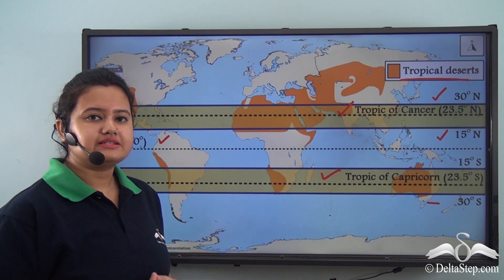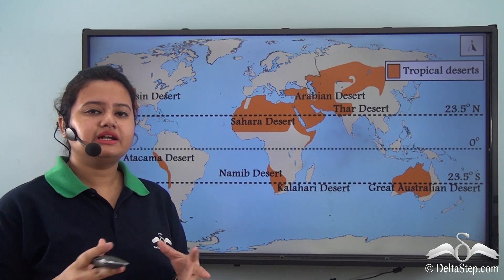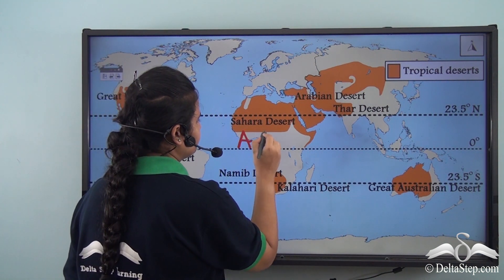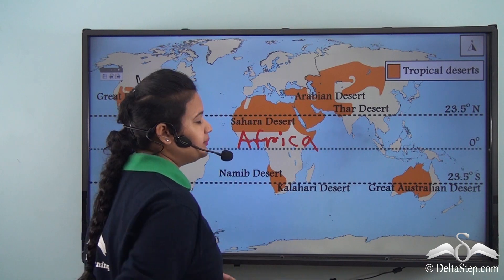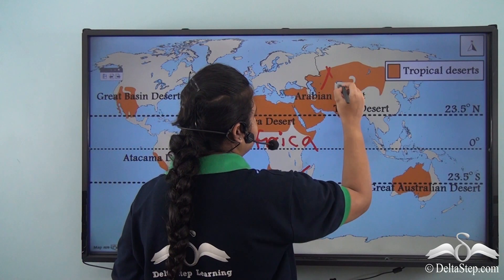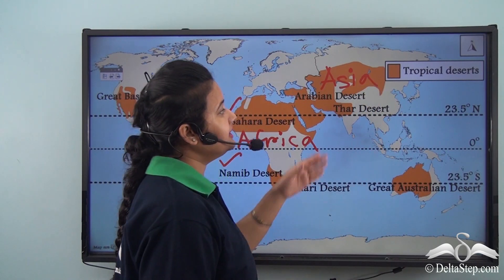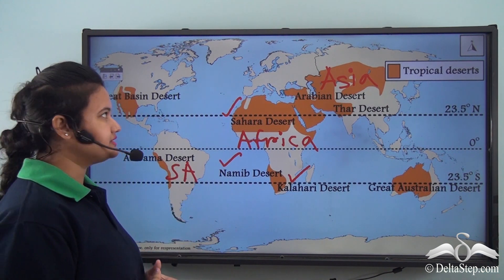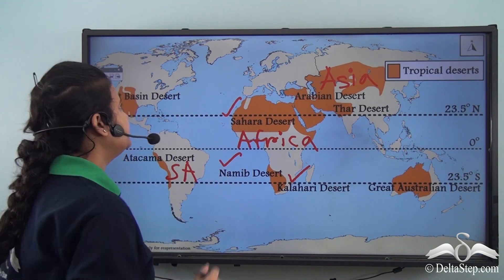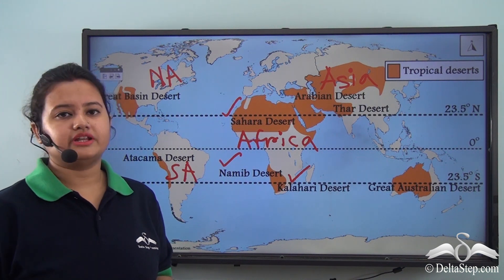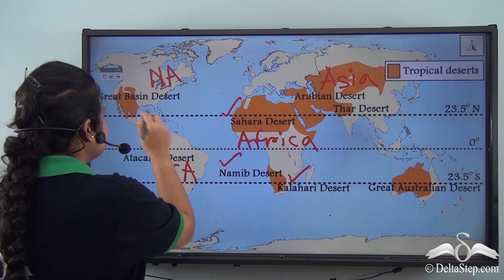The tropical deserts are spread across all the continents. In the continent of Africa, these tropical deserts include the Sahara Desert, Namib Desert, and Kalahari Desert. In the continent of Asia, it includes the Arabian Desert and the Thar Desert. The Atacama Desert of South America is also a tropical desert. Tropical deserts are also present in North America, including deserts like the Mojave Desert, Colorado Desert, and Mexican Desert — together known as the Great Basin Desert.